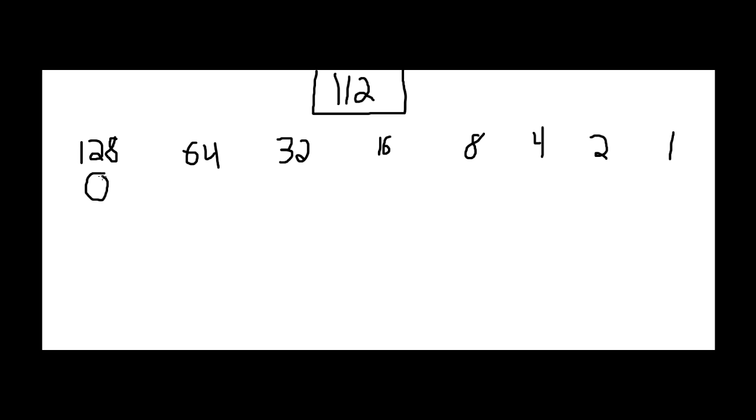If something is higher, it gets a 0. If it's lower, then it gets a 1. So you go on to your next number. 64 is less than 112, so it gets a 1.